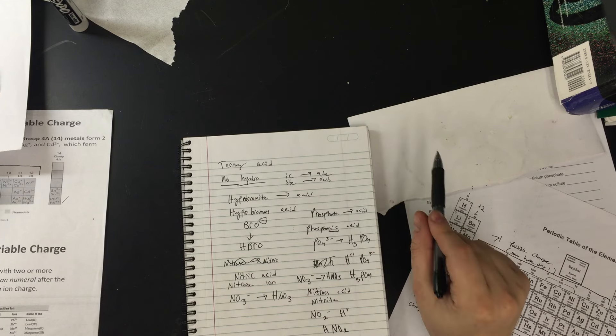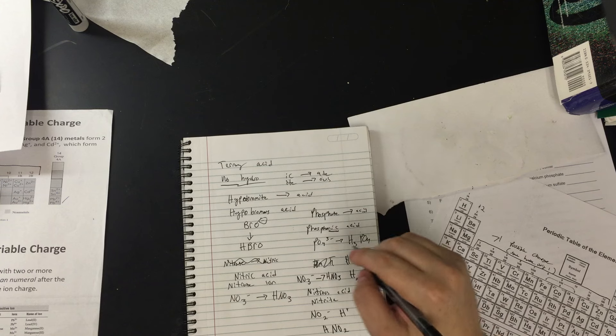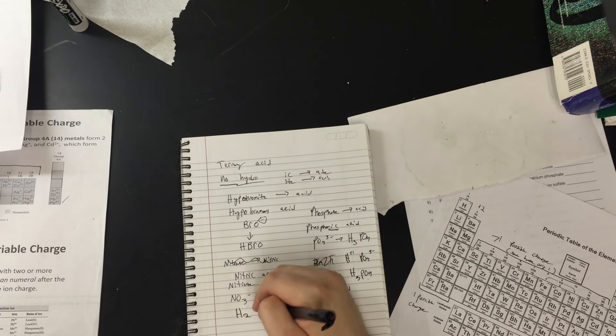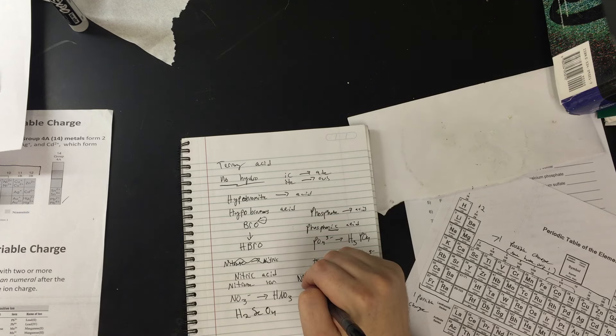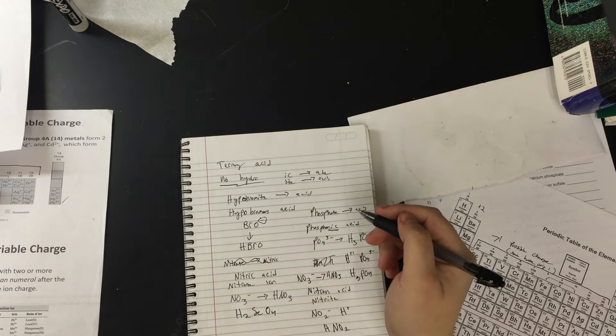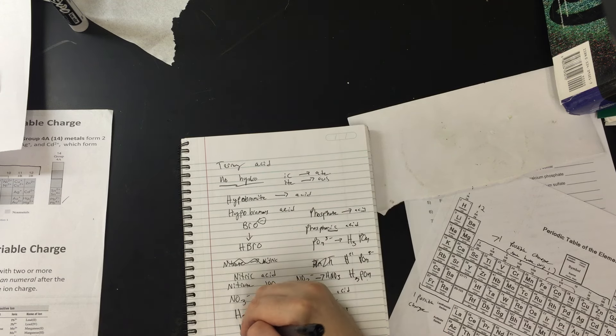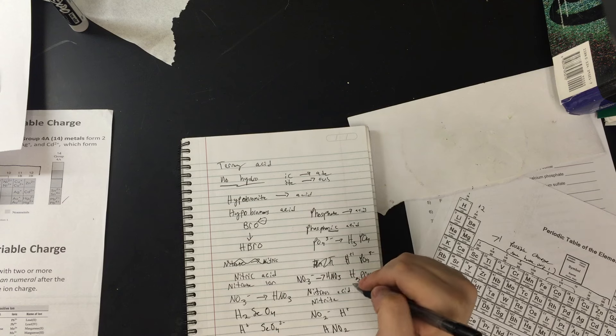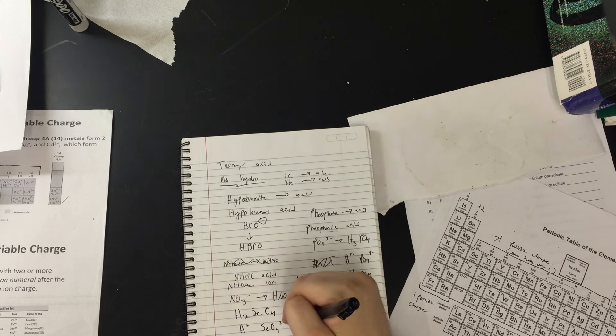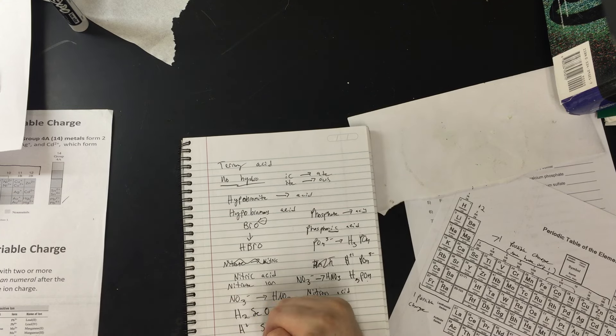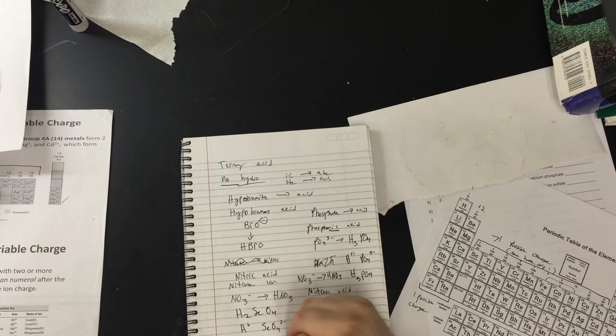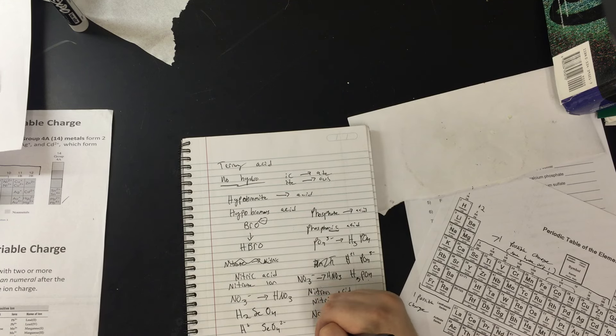I can give you H2SeO4, for example. What is the name of this? So let's work a little bit backwards. H has a plus one. So that means the SeO4 is going to have a two minus charge. SeO4 is selenate. So it's going to go to selenic acid.